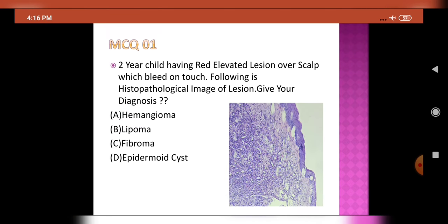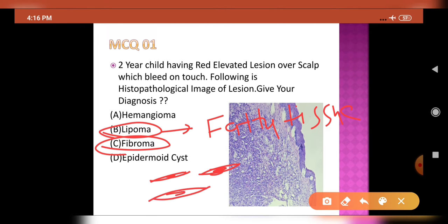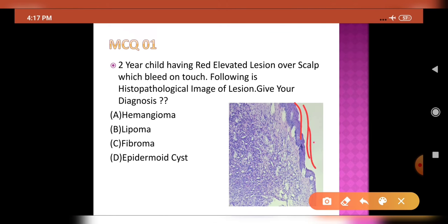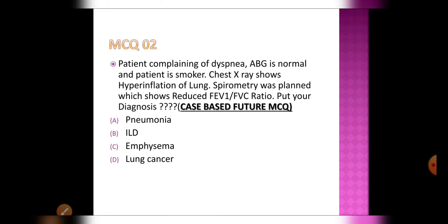It is not a lipoma because adipose tissue is not seen here. It is not a fibroma because there is no abundant spindle-shaped fibroblast proliferation with centrally placed nuclei. It is not an epidermoid cyst because laminated keratin over squamous lining is absent. Therefore, the diagnosis is hemangioma.